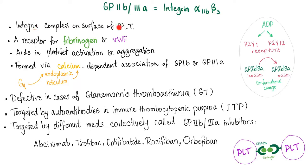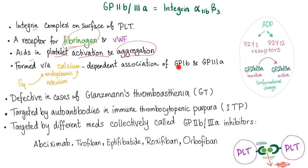They are an integrin complex on the surface of the platelet — a receptor protein that takes the whole thickness of the membrane. It's a receptor for fibrinogen and von Willebrand factor. The fibrinogen is then converted into fibrin fibers, and red blood cells are trapped — this is secondary hemostasis. They aid in platelet activation and aggregation. The GP2B3A receptor is formed via calcium-dependent association of GP2B and GP3A.